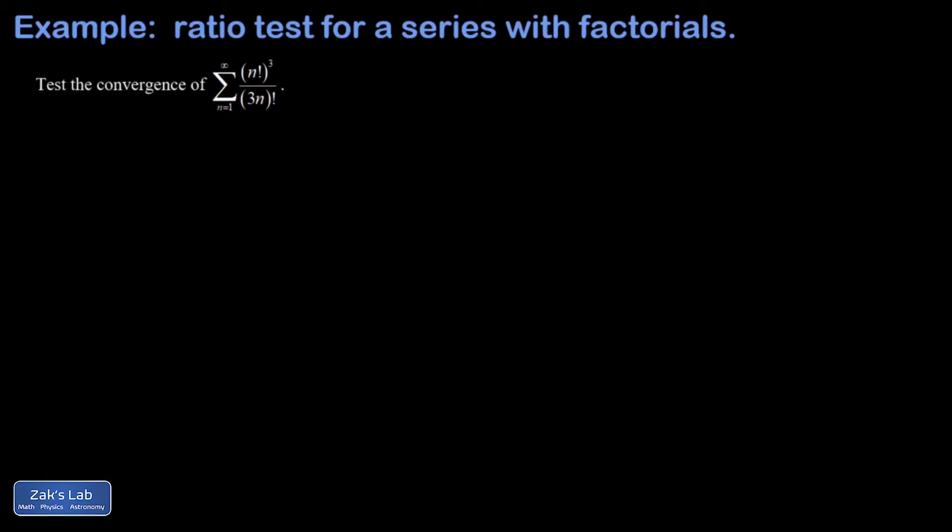Just a quick reminder of the ratio test. We don't have to worry about any absolute value signs here because all these terms are positive. What I do is take the ratio of the next term to the previous term in the large n limit. If this turns out to be less than one, my series is convergent. Greater than one, my series diverges. Equal to one, the ratio test is inconclusive.